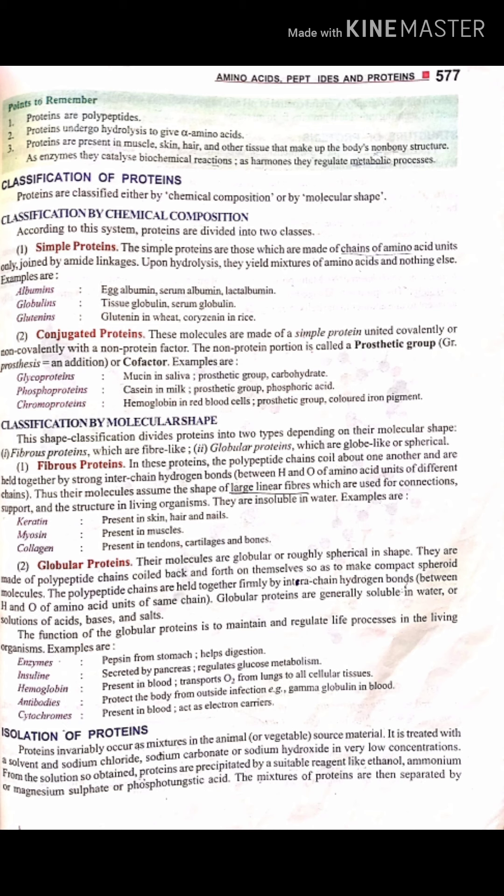In conjugated proteins, the non-protein portion is called a prosthetic group or co-factor. Examples of conjugated proteins include glycoproteins, phosphoproteins, and chromoproteins. Classification of proteins can be done by chemical composition.